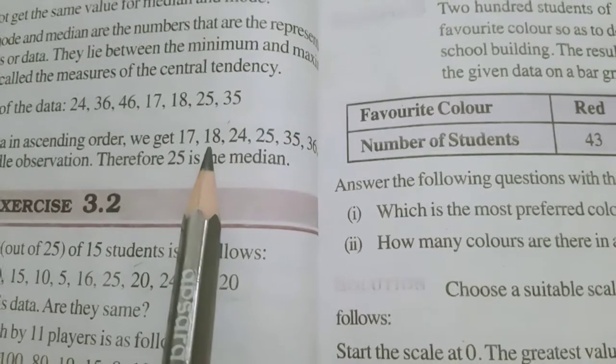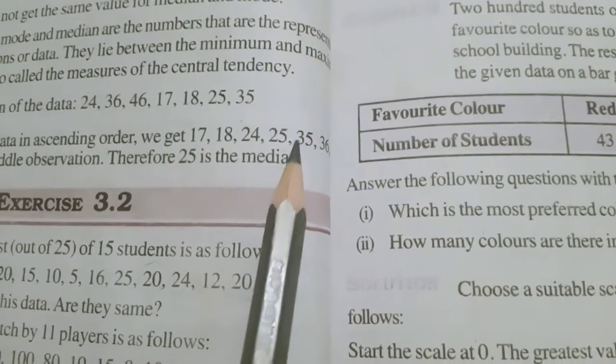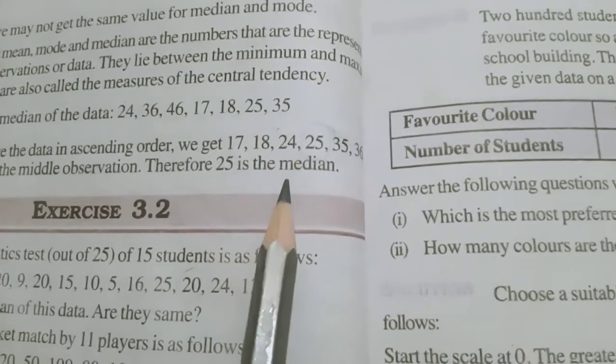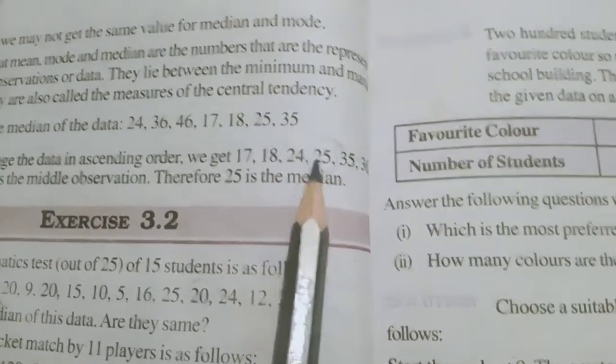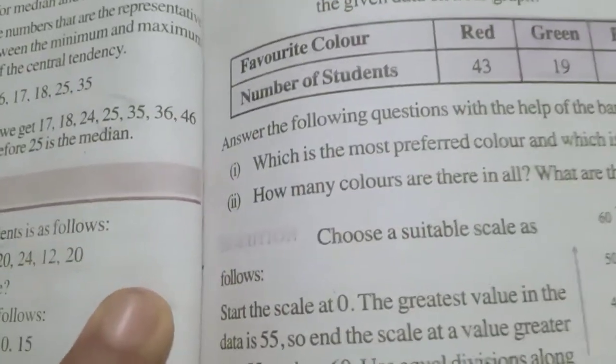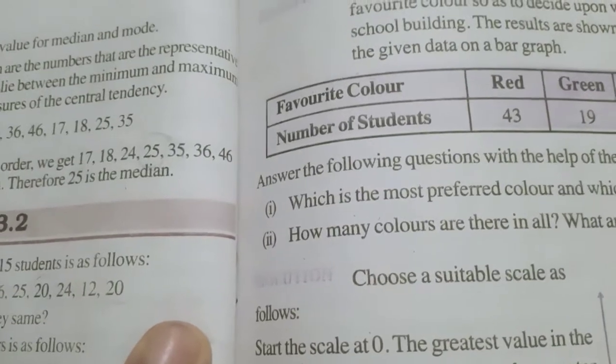Means 4th observation. Then see 1, 2, 3, 4. 4th observation is 25. Therefore, median of the data is 25. Got it? For this 25, see 3 terms. 1, 2, 3 towards the left side. And 1, 2, 3. 35, 36, 46 towards the right side. It is coming exactly at middle. Okay?